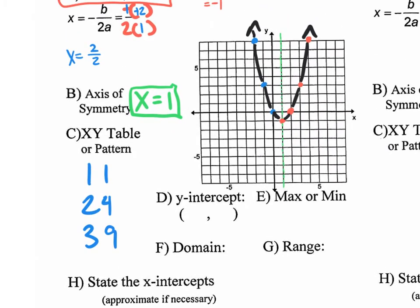Now down here, we need to state a couple more things. What is the y-intercept? Where does it cross the y-axis? It crosses right here, and that coordinate is 0, 0 — that happens to be the origin. So for the y-intercept, 0 comma 0 is your coordinate.